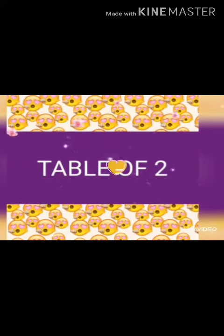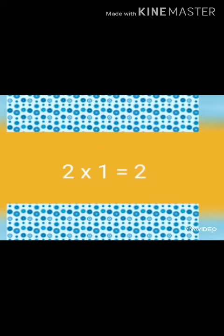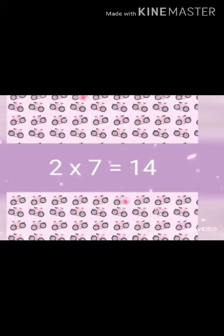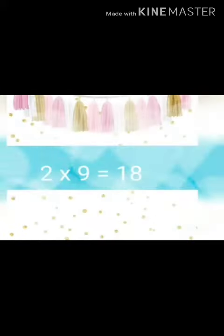Let's start table of two. 2 1s are 2, 2 2s are 4, 2 3s are 6, 2 4s are 8, 2 5s are 10, 2 6s are 12, 2 7s are 14, 2 8s are 16, 2 9s are 18, 2 10s are 20.